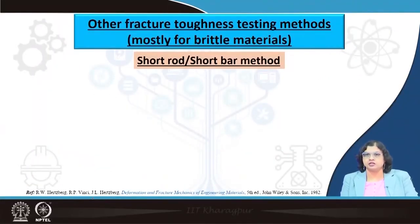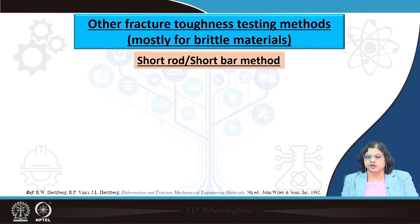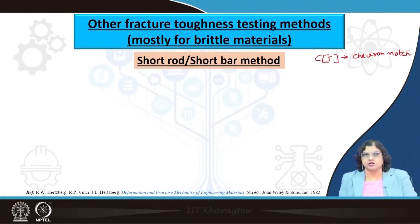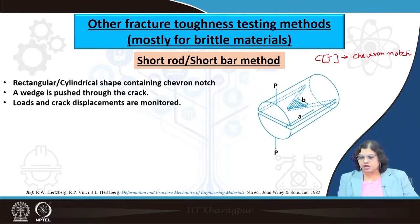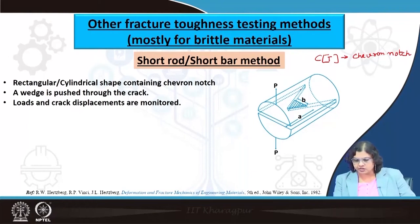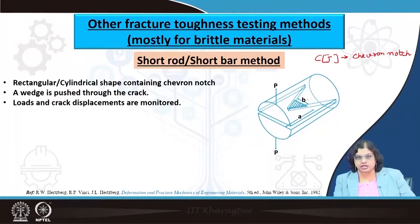Moving on to other methods by which fracture toughness is measured, particularly for brittle materials: the problem with the standard method for brittle materials is that it is very difficult to machine a notch in the required configuration. That is why we use simpler methods where specimen preparation is not as difficult.